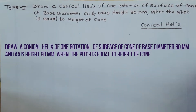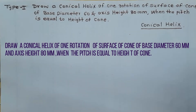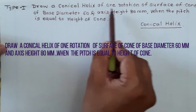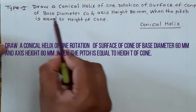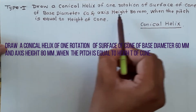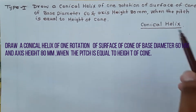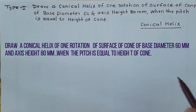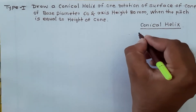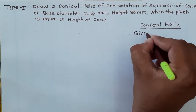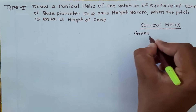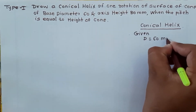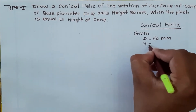Hello friends. Today we will see a problem on conical helix. For our purpose we have to see the problem statement: Draw a conical helix of one rotation on the surface of a cone of base diameter 60 mm and axis height 80 mm. The condition given is that the pitch is equal to the height of the cone. Given data: diameter of cone is 60 mm and axis height is 80 mm.